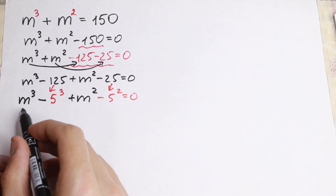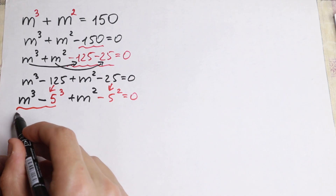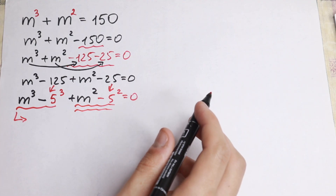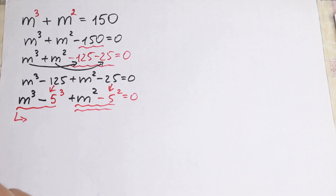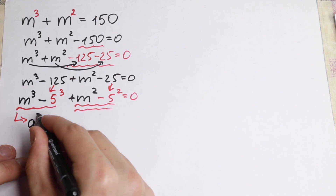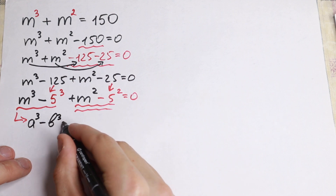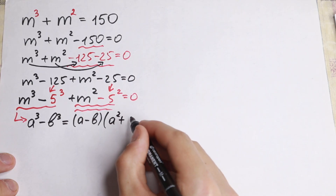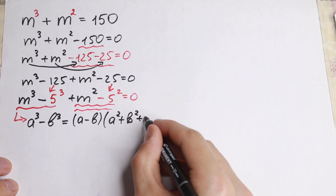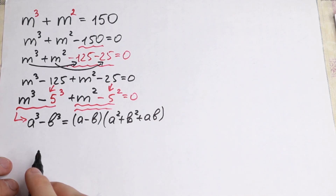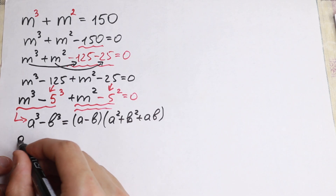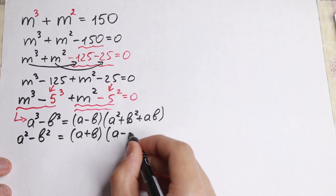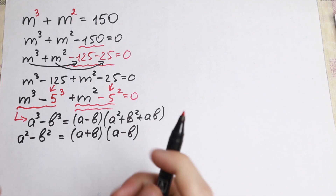Right now we have a difference of two cubes and a difference of two squares, and we need to know the formulas. The difference of two cubes: a³ minus b³ equals (a minus b)(a² plus b² plus ab). And the second formula, difference of two squares: a² minus b² equals (a plus b)(a minus b). We are going to apply both formulas here.